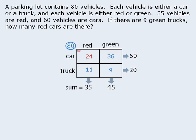So, of the 80 vehicles in the parking lot, there are 36 green cars, 9 green trucks, 11 red trucks, and 24 red cars. The question asks us to find the total number of red cars, so it's 24.